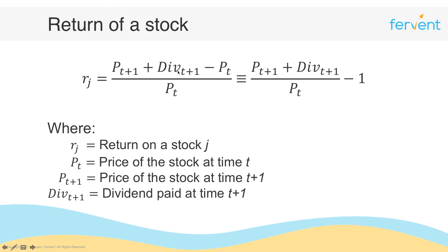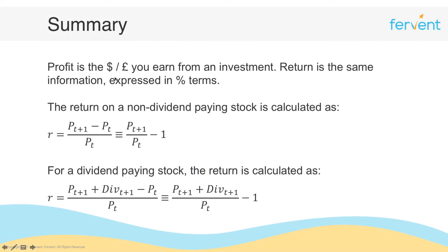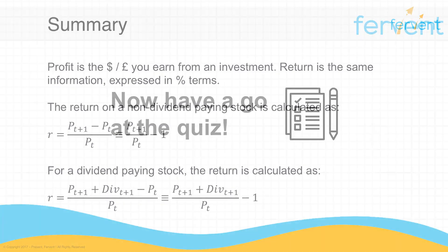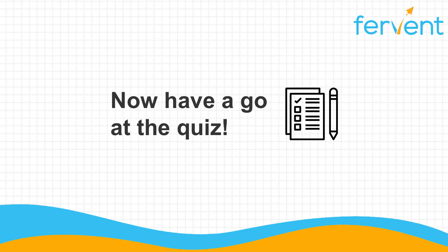To summarize: profit is the dollar amount you earn from an investment, while return expresses that same information in percentage terms. The return on a non-dividend paying stock is pt+1 minus pt over pt, or simply pt+1 over pt minus 1. For a dividend-paying stock, the return is pt+1 plus div(t+1) over pt minus 1. If any part of this video is not clear, please rewatch it before moving on. Have a go at the quiz and I'll see you in the next video.